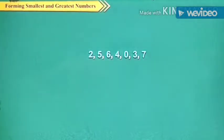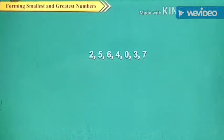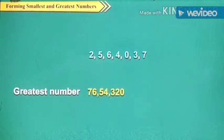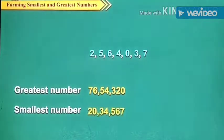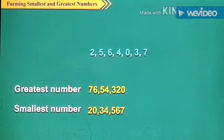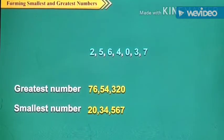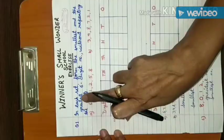Now let us write the greatest and smallest 7-digit number without repeating the digits using: 3, 2, 5, 6, 4, 0, 7. The greatest number is 76,54,320. And the smallest number is 20,34,567, because 0 at the extreme left position is meaningless.